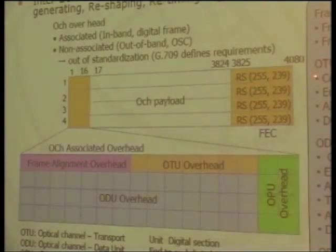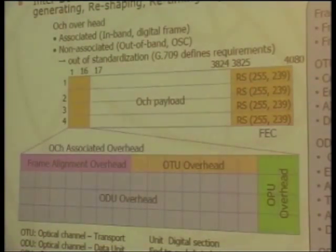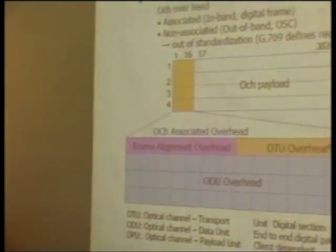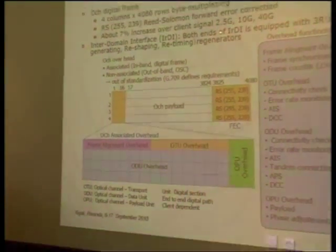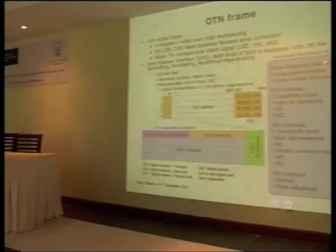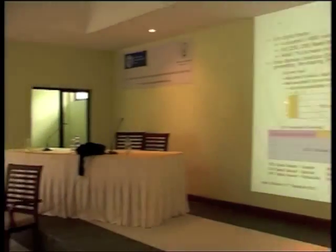Due to this forward error correction, the bit rate increases about 7% over the client signal, basically 2.5G, 10G, or 40G. And at the inter-domain interface, both ends are equipped with 3R regeneration: reshaping, retiming, and regenerating.